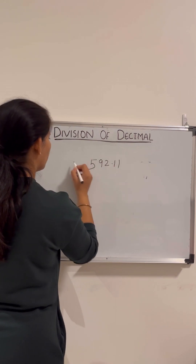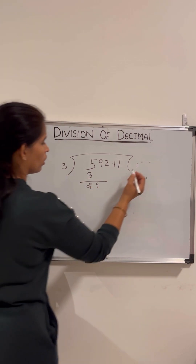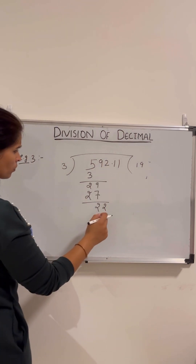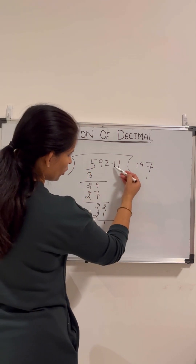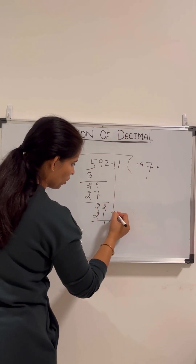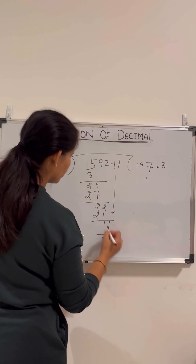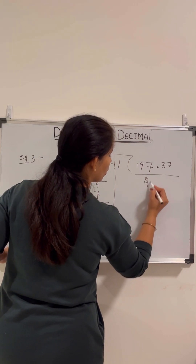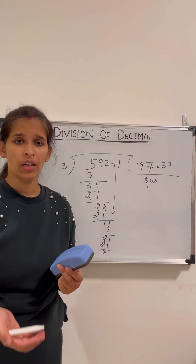Solving 592.11 divided by 3: 3 ones are 3, carry 2. Then 9 — 3 threes are 9, carry 2. Then 2 — 3 sevens are 21. Now we see the decimal between the digits, so the decimal goes into our quotient. Drop 1: 3 threes are 9. Drop the next 1: 3 sevens are 21. Our quotient is 197.37 and remainder is 0.